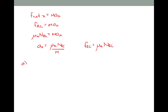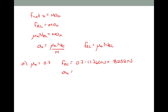For Part A, mu k equals 0.7 as found from the table. The force of friction equals 0.7 multiplied by 11,760 newtons, which is 8,232 newtons. The acceleration is that frictional force — 8,232 newtons — divided by the mass of 1,200 kilograms, which gives an acceleration of 6.86 meters per second squared.